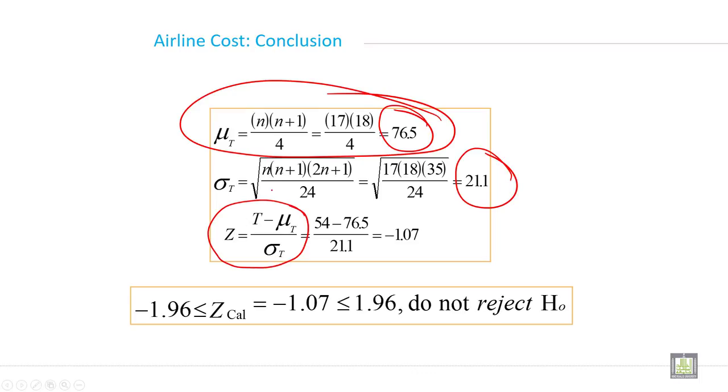So when you will put all the values in the formula it will be minus 1.07, minus 1.96 less than and equal to Z calculated minus 1.07 less than and equal to 1.96. This one. So the decision will be do not reject null hypothesis.